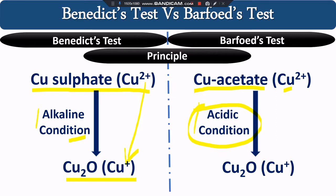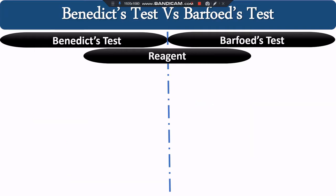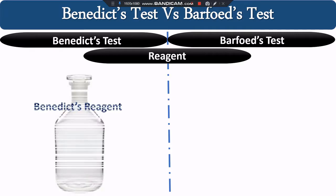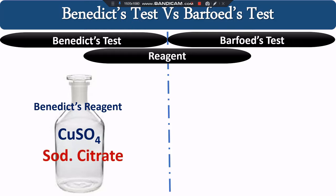In the Barfoed test, Cu²⁺ is also reduced to Cu⁺ and the color is converted from blue to brick red. Now for the reagents: in the Benedict test we use Benedict reagent, which contains three components. First is copper sulfate, which provides Cu²⁺ ions. Second is sodium citrate, which keeps copper in the Cu²⁺ state and prevents it from precipitating. Third is sodium carbonate, which provides the alkaline environment.